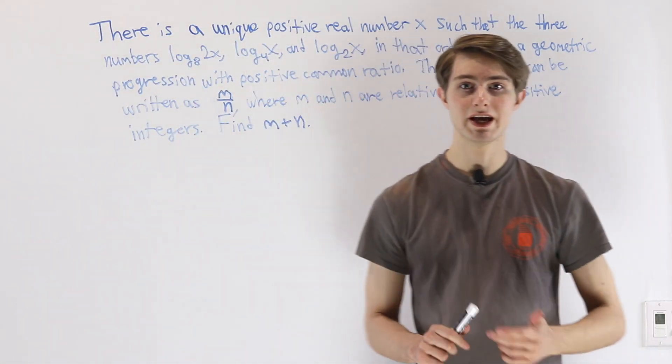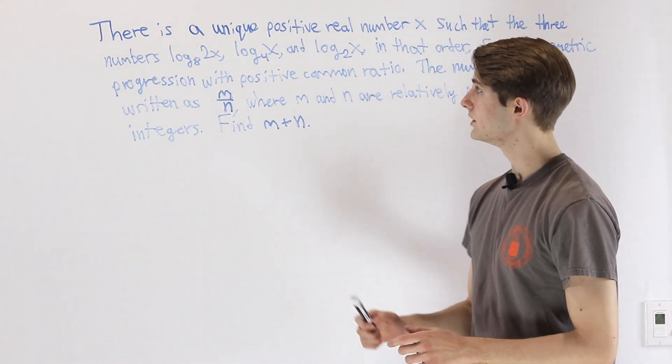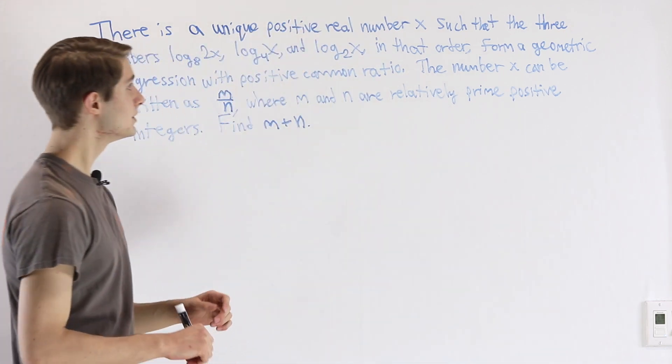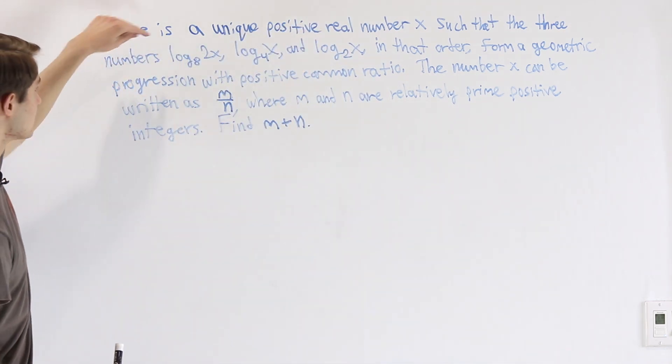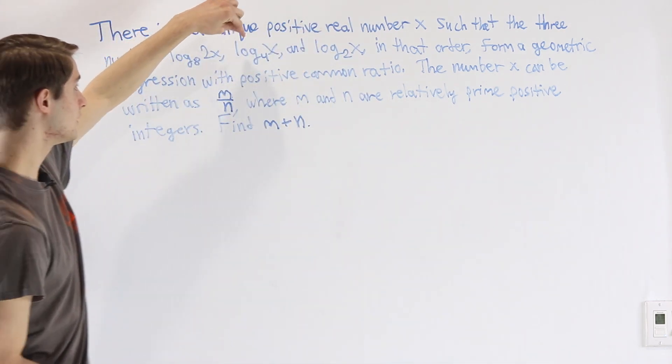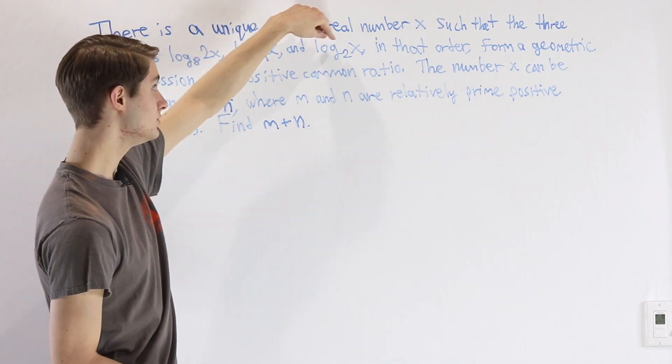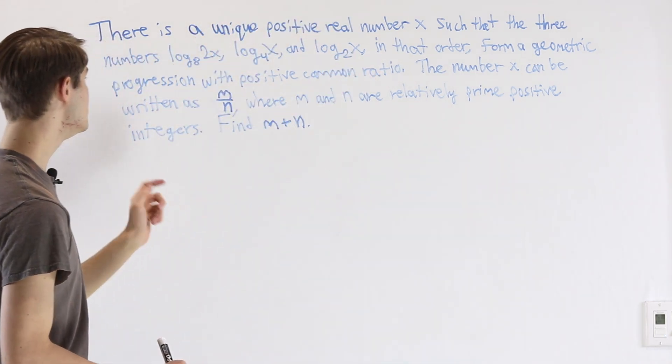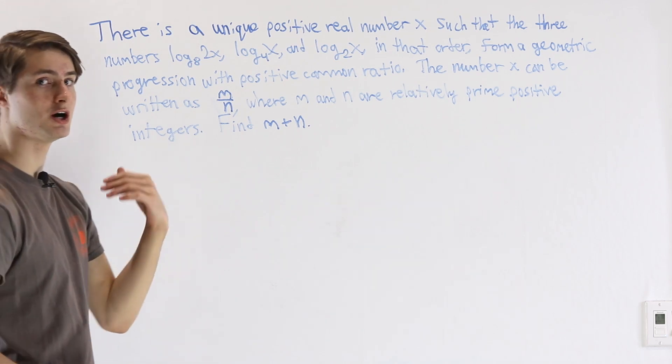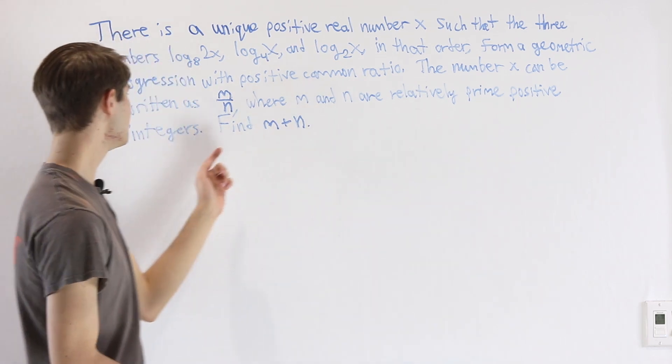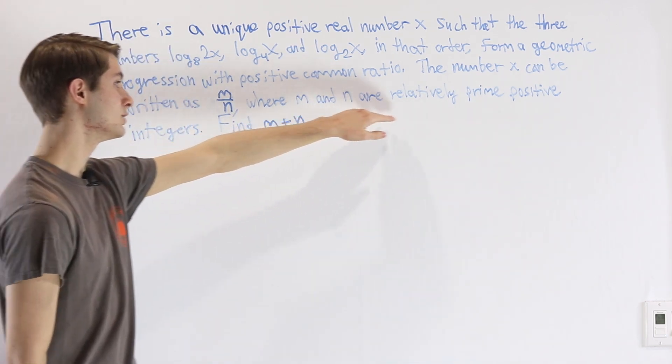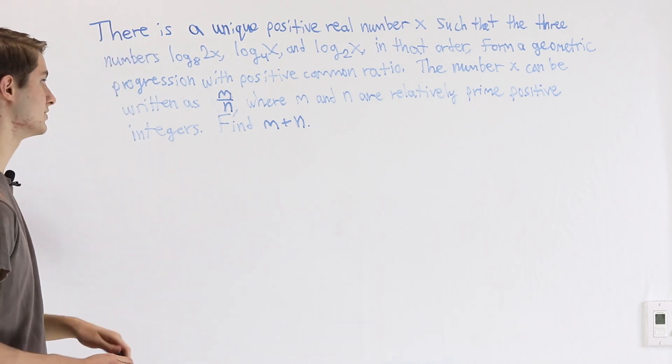We are going to do the 2020 AMC 10 problem 2. There is a unique positive real number x such that the three numbers log base 8 of 2x, log base 4 of x, and log base 2 of x in that order form a geometric progression with positive common ratio. The number x can be written as m over n where m and n are relatively prime positive integers.